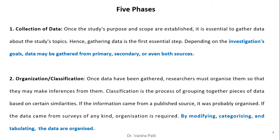Let us discuss all five stages of statistics. The first stage is collection of data. Once the study purpose and scope are established, it is essential to gather data about the study topics. Depending on investigation goals, data may be gathered from primary, secondary, or even both sources.